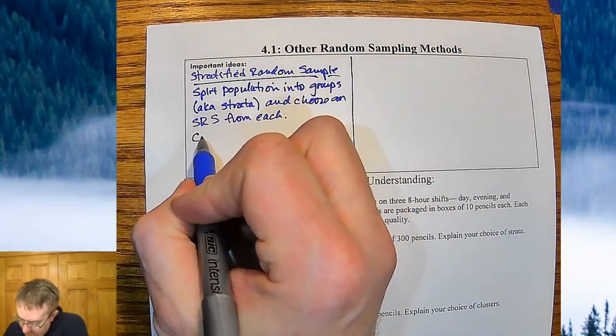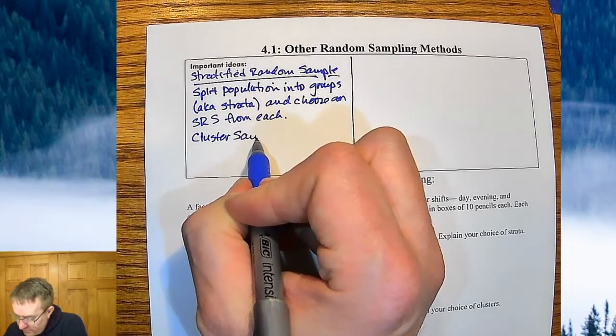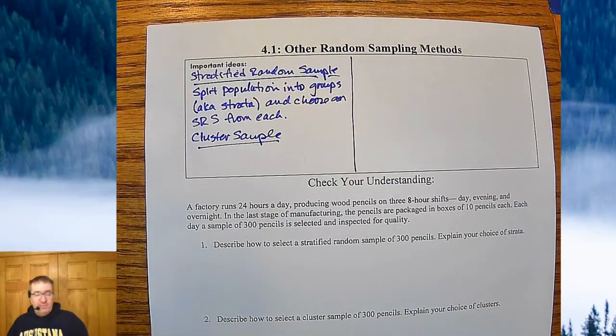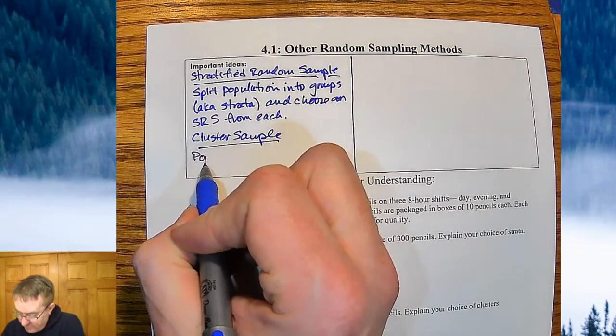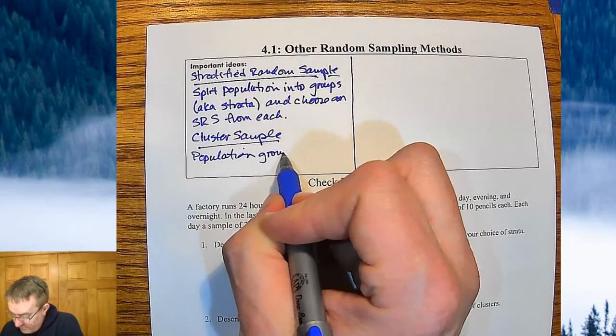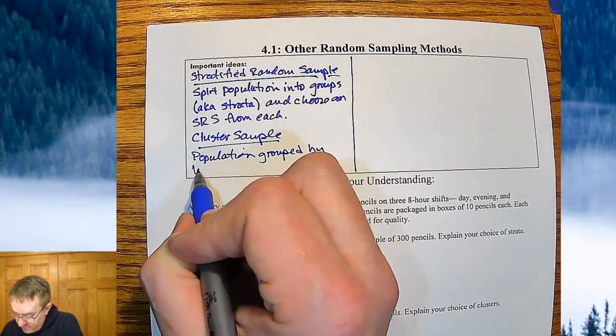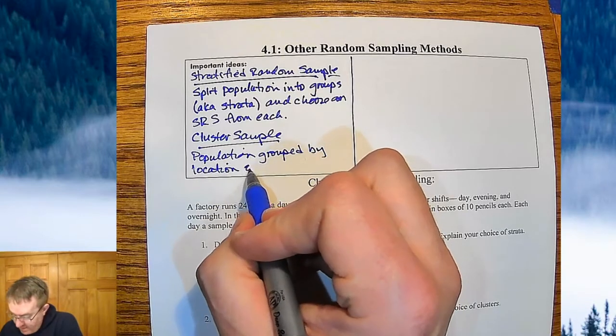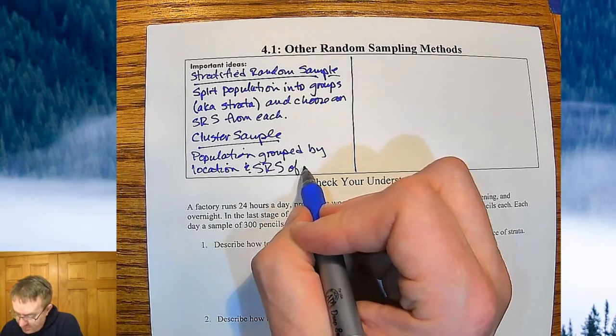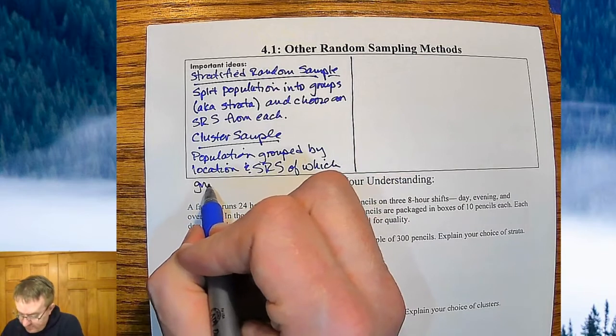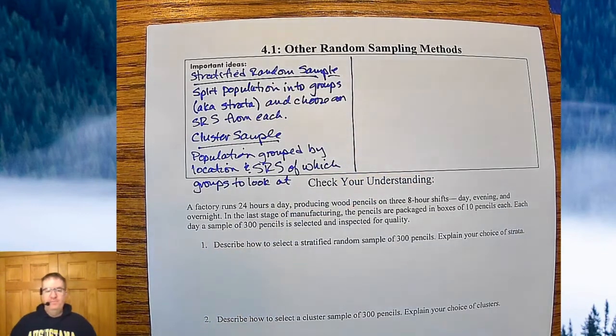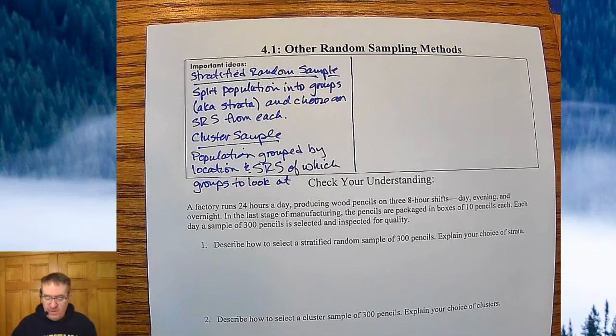Another one is called a cluster sample. What a cluster sample does is the population is already pre-grouped. So the population is grouped by location, and you take a simple random sample of which groups to look at. Yeah, they kind of seem really similar.